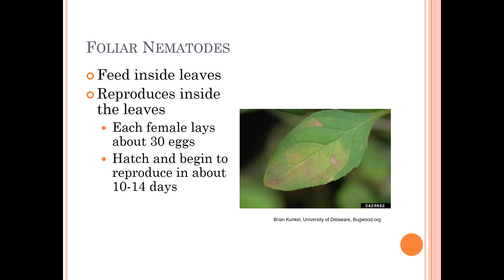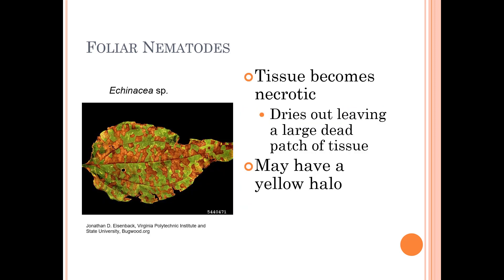Foliar nematodes reproduce inside the leaf. Each female lays about 30 eggs, which hatch and begin to reproduce at about 10 to 14 days. The tissue becomes necrotic and dies back, drying out and leaving a large dead patch of tissue. You may also see a yellow halo, which you can observe on echinacea.